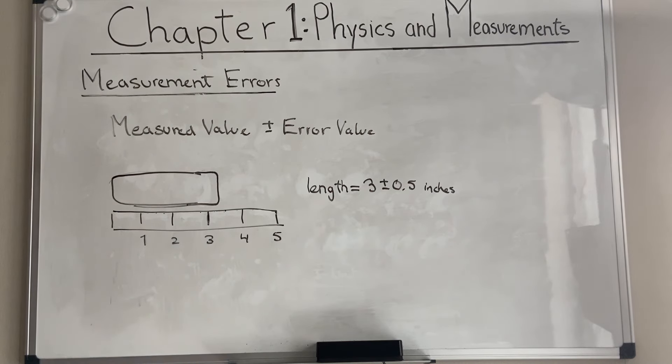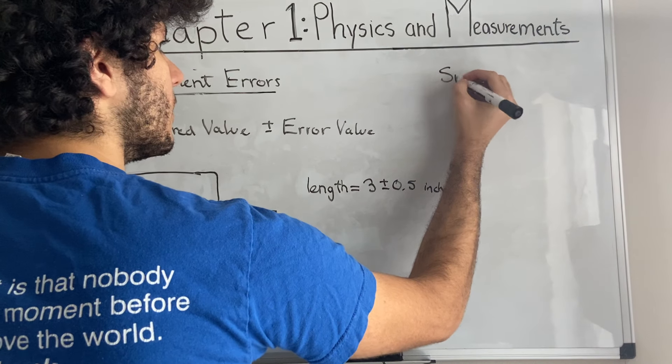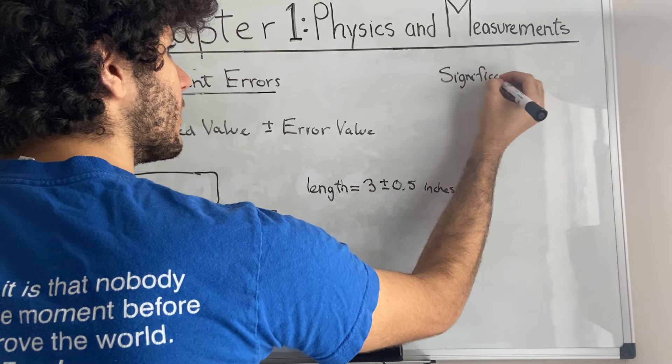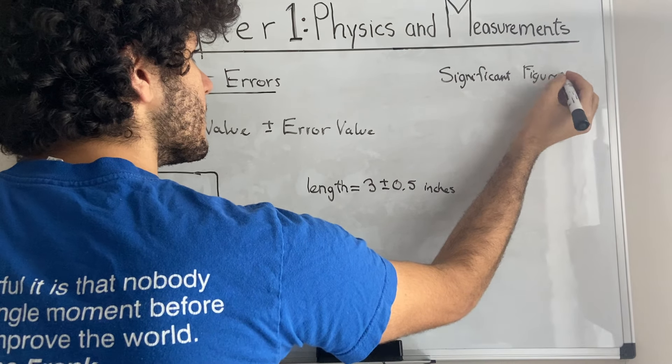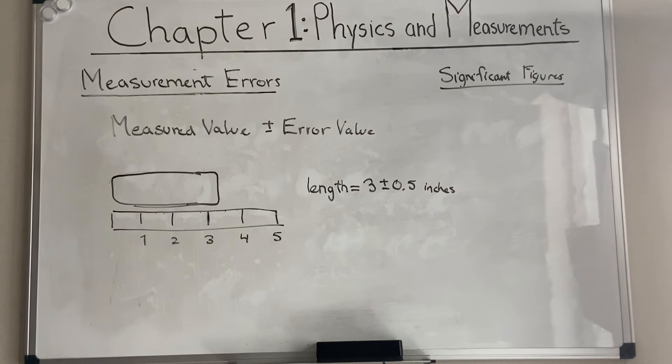With this way of noting measurements, we basically are considering how many significant figures we want to add to the number. And I'm going to explain that right now. Significant figures. These are basically the digits that carry meaningful contributions to the measurement's resolution. And that might sound a little bit daunting. You might be asking, like, what does that mean? Well, the number of significant figures indicates the accuracy of a measurement.